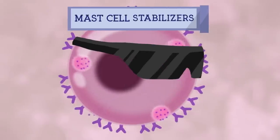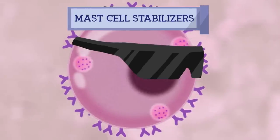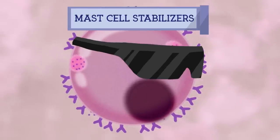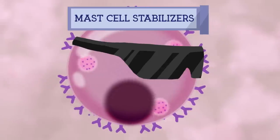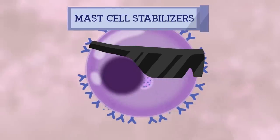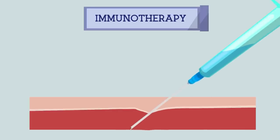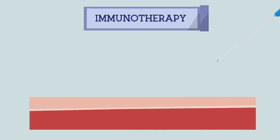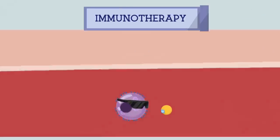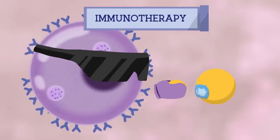4. Mast cell stabilizers: these are medications used to prevent or control certain allergic disorders. They block a calcium channel essential for mast cell degranulation, stabilizing the cell and preventing the release of histamine. 5. Immunotherapy: when you get immunotherapy in the form of allergy shots, your allergist injects small doses of the substances you are allergic to under your skin, helping your body get used to the allergen, which can result in fewer or less severe symptoms.